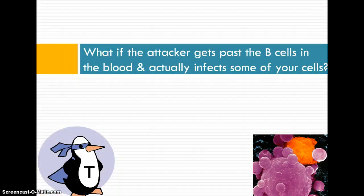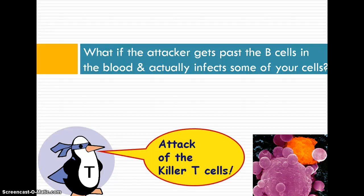What happens if that attacker gets past the first and second lines of defense? Maybe the B cells can't make antibodies quickly enough and the pathogen actually infects some of your cells and goes internally. Well, if that's the case, we have to call on the T cells for help, and this is called cell mediated immunity.